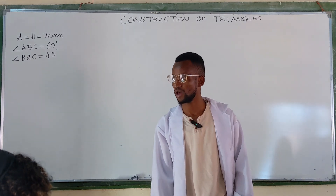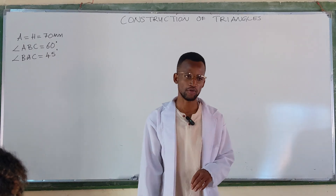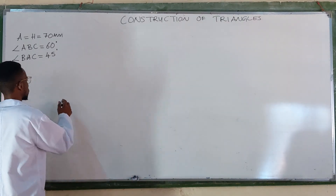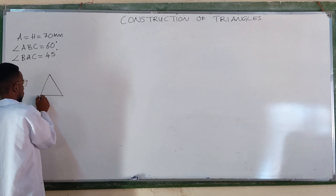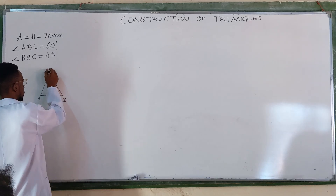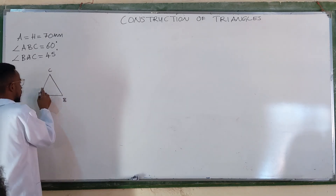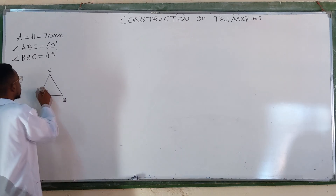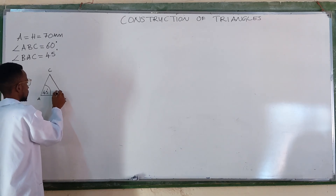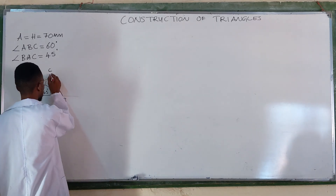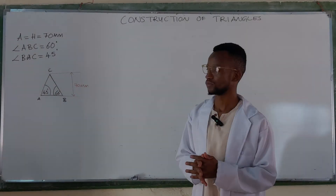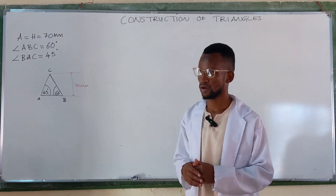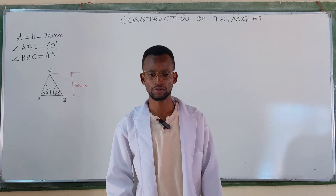We can do a rough sketch of what our triangle will look like. So if this is our triangle ABC, we expect this angle here to be 45 degrees and then 60 degrees here. And then our altitude or our height. This is how our triangle will look according to that sketch.